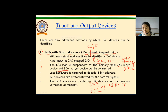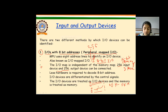The range of addresses in hexadecimal will be from 00H to FFH. This entire range is called IO space, and the individual addresses are called IO device address or IO port number.